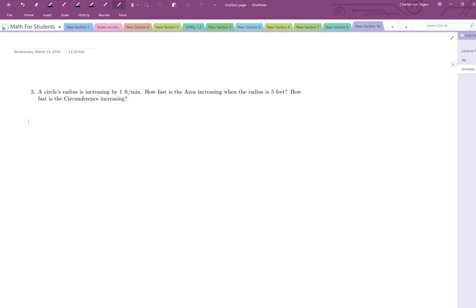Okay, folks. Let's go ahead and keep working with this. I'm now looking at example number three. A circle's radius is increasing by one foot per minute. How fast is the area increasing when the radius is five feet? And then the next question is how fast is the circumference increasing? So there's two questions here. Maybe I should have separated them. But I'd like you to focus on this first one. So go ahead and give this a shot.